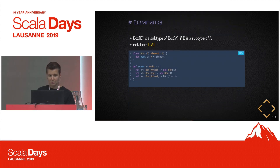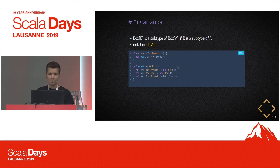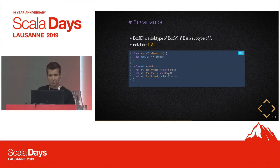Another possibility often found in containers is covariance. If a box is read-only — so we are not able to update the element inside — it's safe to say we can use a box of Dog wherever we expect a box of Animal, because all we can do is look at or take out the element, and we get a subtype which we can use wherever we expect the supertype.